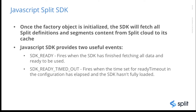When the factory object is initialized, the SDK will fetch all the split definitions — meaning all the targeting rules and the whitelist information stored in the splits — and it will also download the segment content under that organization. Of course, only the splits and segments associated with the environment, since we are using an environment API key.